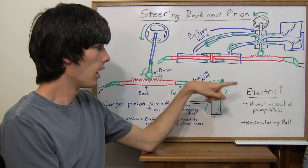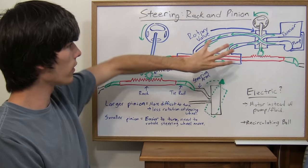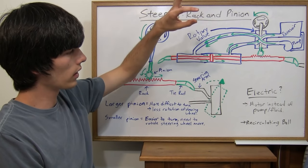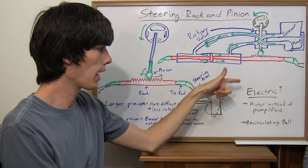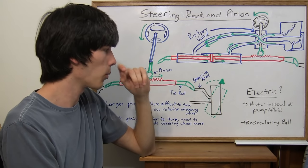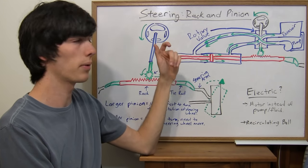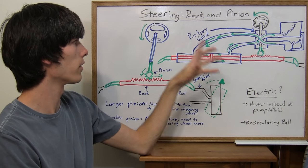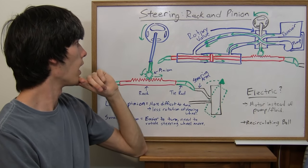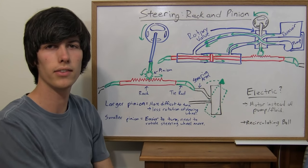Now electric power steering, so what that does instead of using the fluid like this, it'll include a motor in there and the motor will assist you in turning. And there's also, as I mentioned, a recirculating ball type of steering, so if you want to look into that, that's another option out there. But for this video I just went over the standard rack and pinion steering.